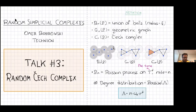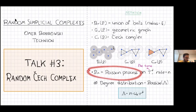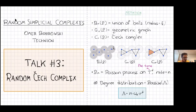Whenever three balls intersect, we place a two-dimensional face. Generally, if we have K+1 balls that intersect, we put the corresponding K-dimensional simplex. The point process I will use is a Poisson point process on the flat torus — the unit box with opposite sides identified.